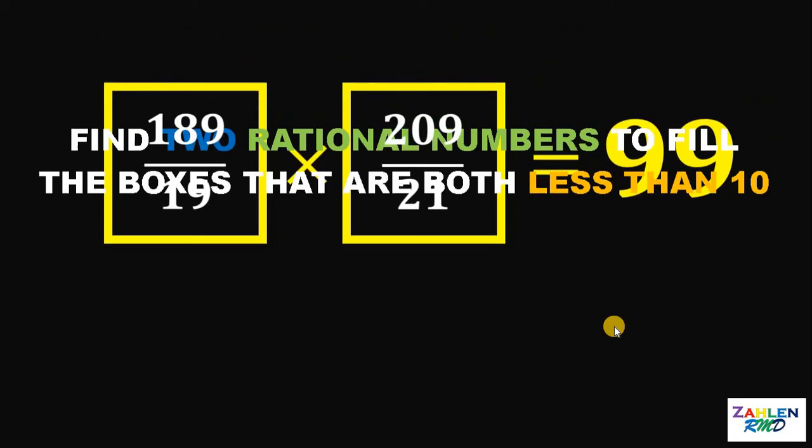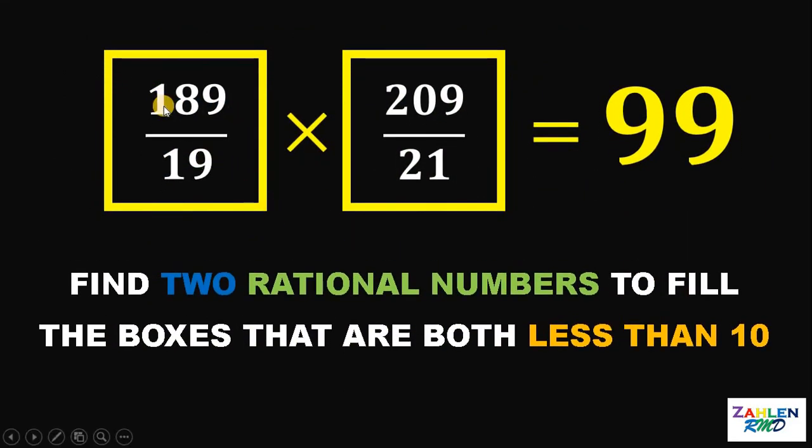Therefore, one of the solutions to this problem must be 189 over 19 and 209 over 21. And, as always, we are done.